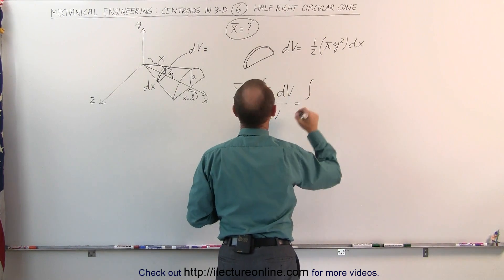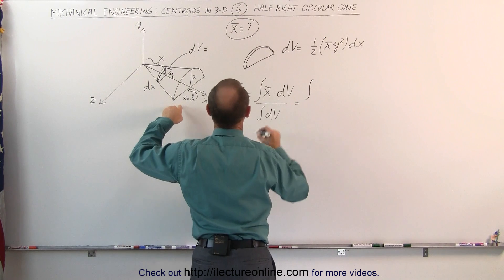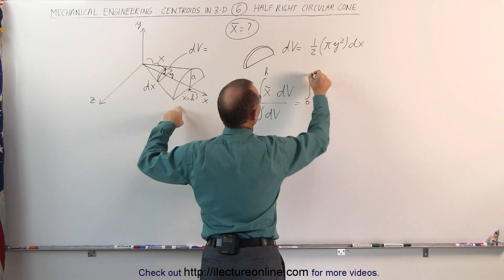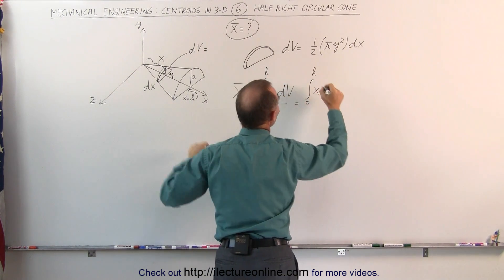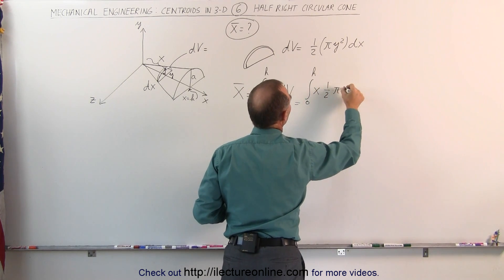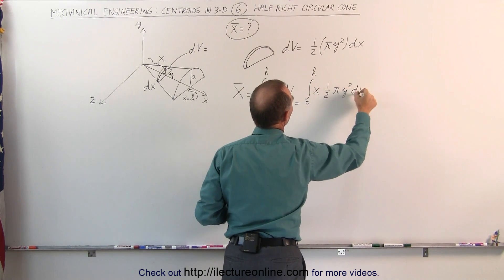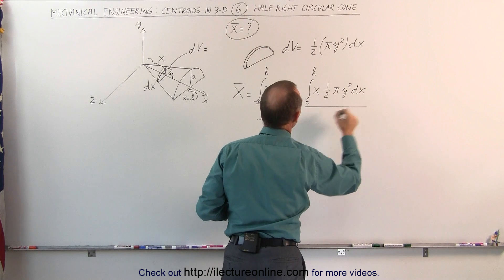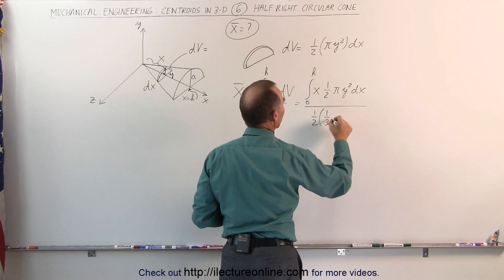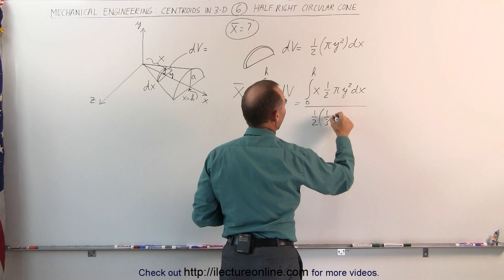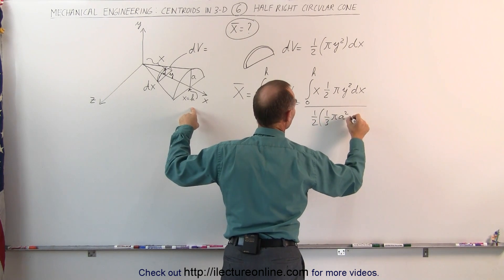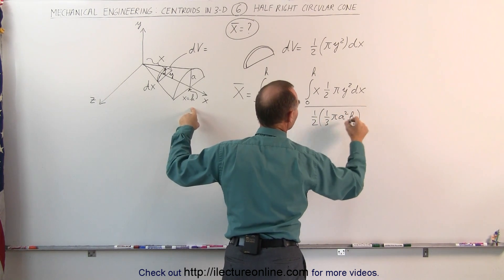For the numerator we get the integral from zero to h of x times DV, which is one-half pi y squared dx. In the denominator we get one-half the volume of a full cone, which is one-third the area of the base pi a squared times the height h.